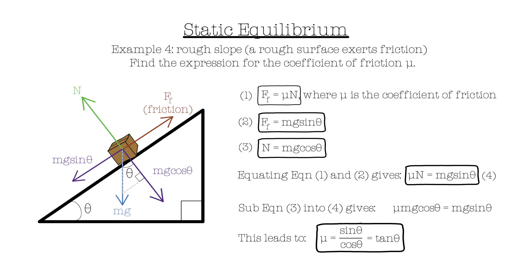So, the value of mu can be determined if you know the angle of the slope. That is to say, the friction acting on the box depends on the angle the slope is making to the horizontal.